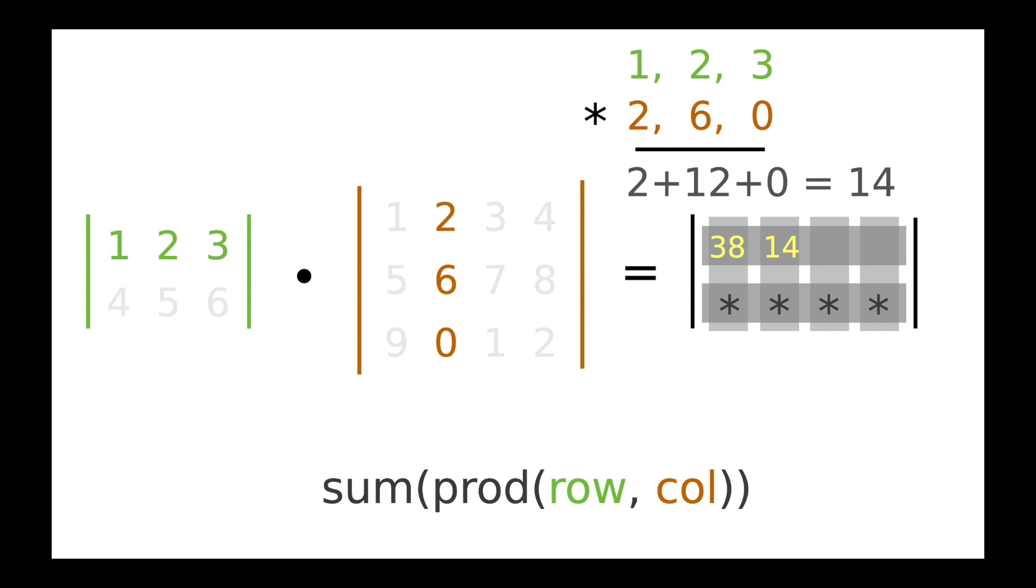And then we're going to keep moving across to the right in exactly the same way. So if you look at that 2, 6, 0 row on the right hand side, that's going to move to 3, 7, 1. And then when I do that math, I get a 20. And then with 4, 8, 2, I do the same thing and I get a 26.